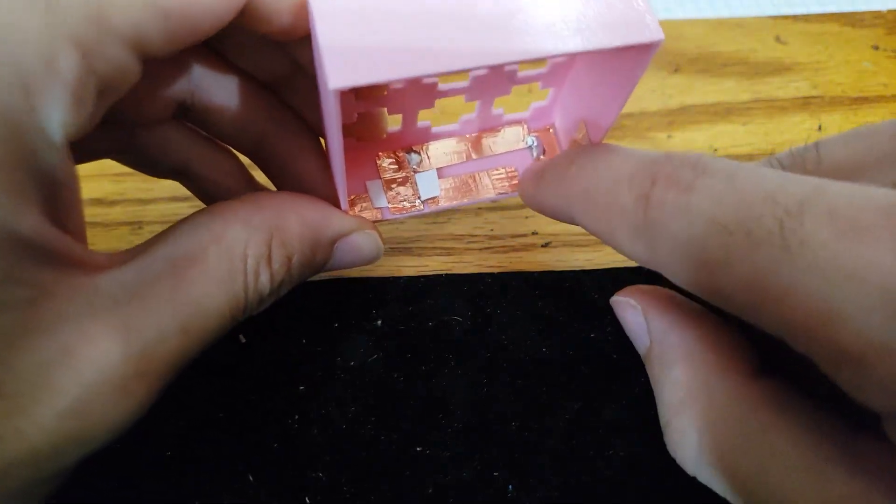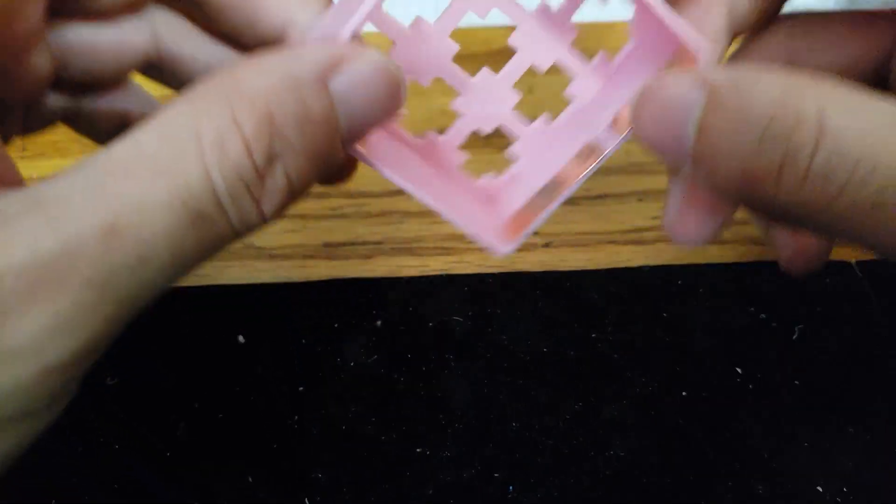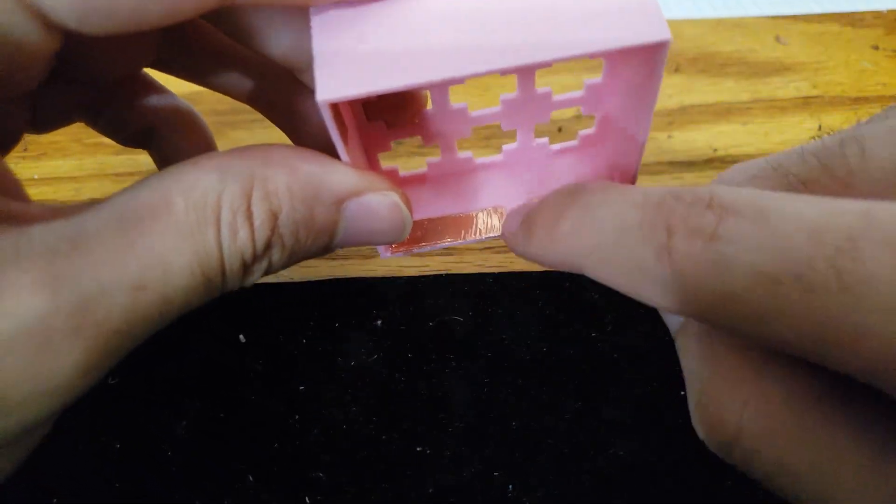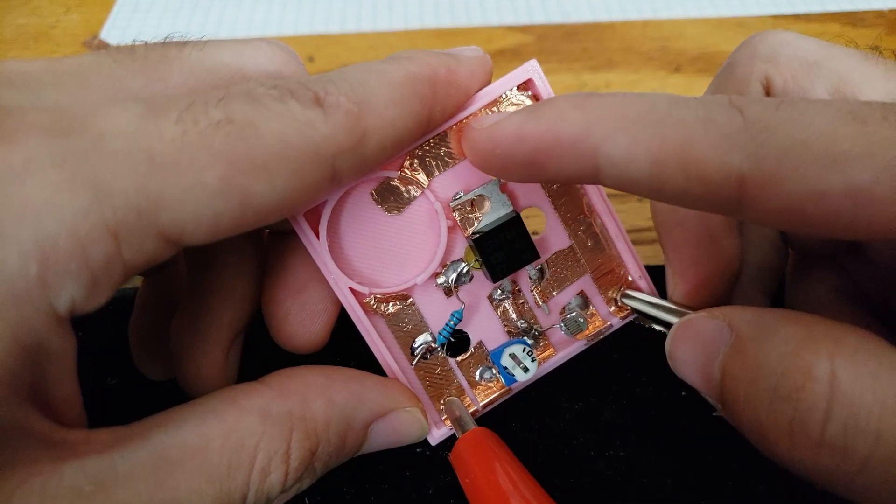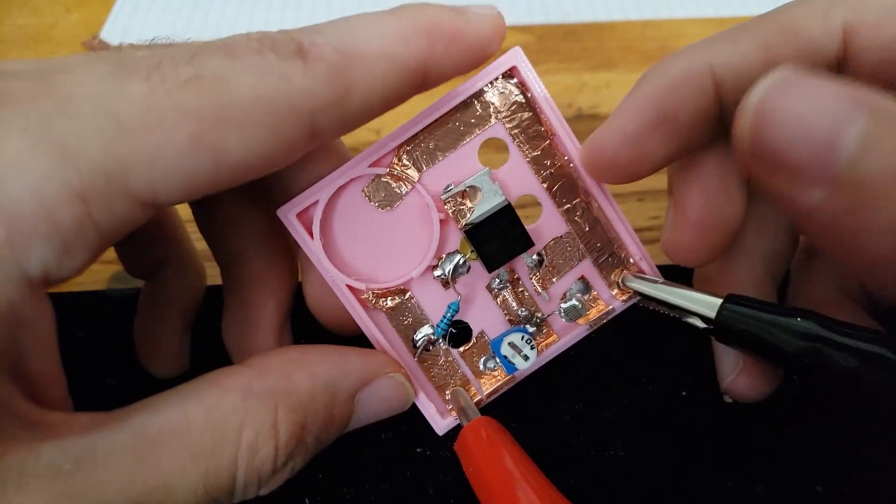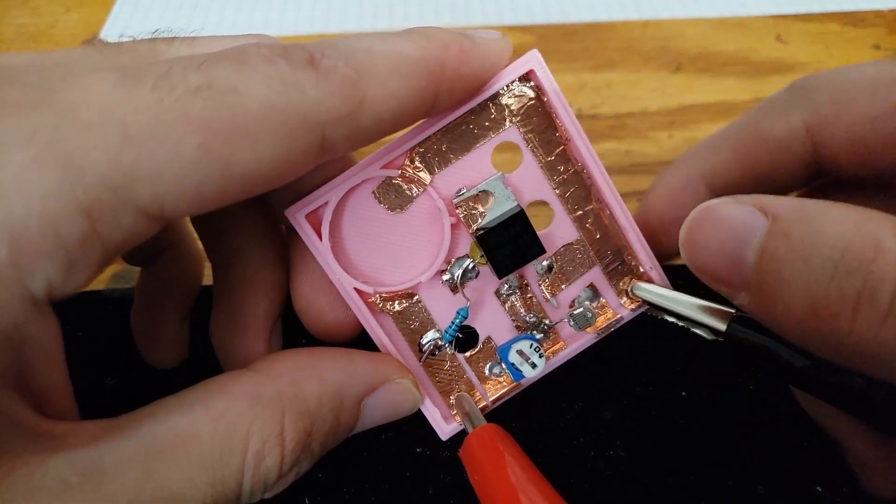It goes up and over and down here. And on the other side, it's just two pads here with a gap in the middle. Using copper tape is really finicky, so I recommend just using a PCB if possible.